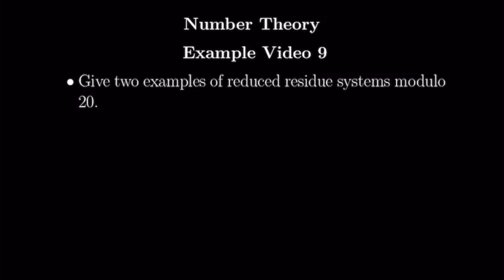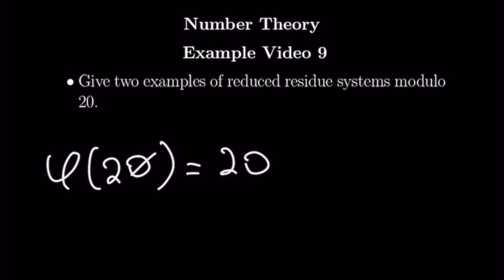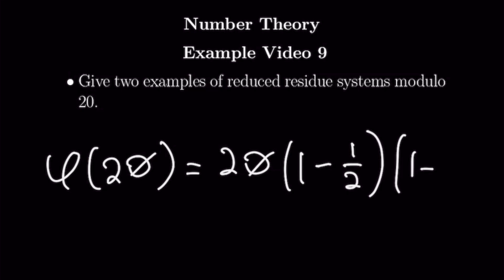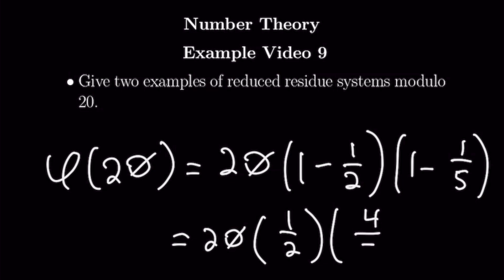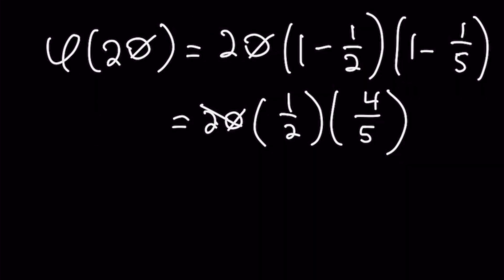Our first example says: give two examples of reduced residue systems modulo 20. We're going to start by taking φ(20). φ(20) = 20 × (1 − 1/2) × (1 − 1/5), as 2 and 5 are the prime divisors of 20. I'll write this in shorthand as 20 × (1/2) × (4/5). Simplifying: cancel 20 and 2 to get 10, then cancel 5 with 10 to get 2, and 2 × 4 = 8.